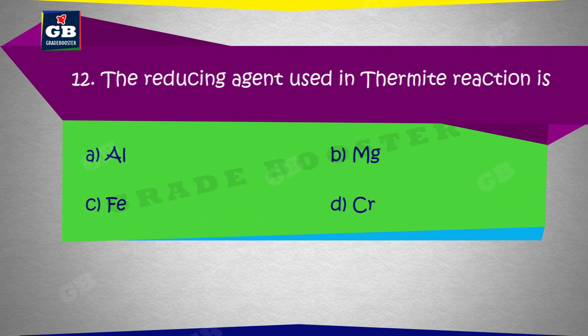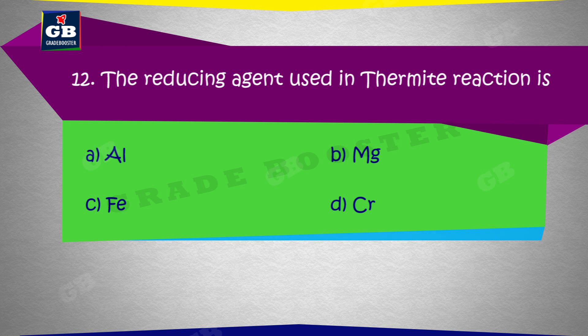The reducing agent used in thermite reaction is: A. Al, B. Mg, C. Fe, D. Cr.